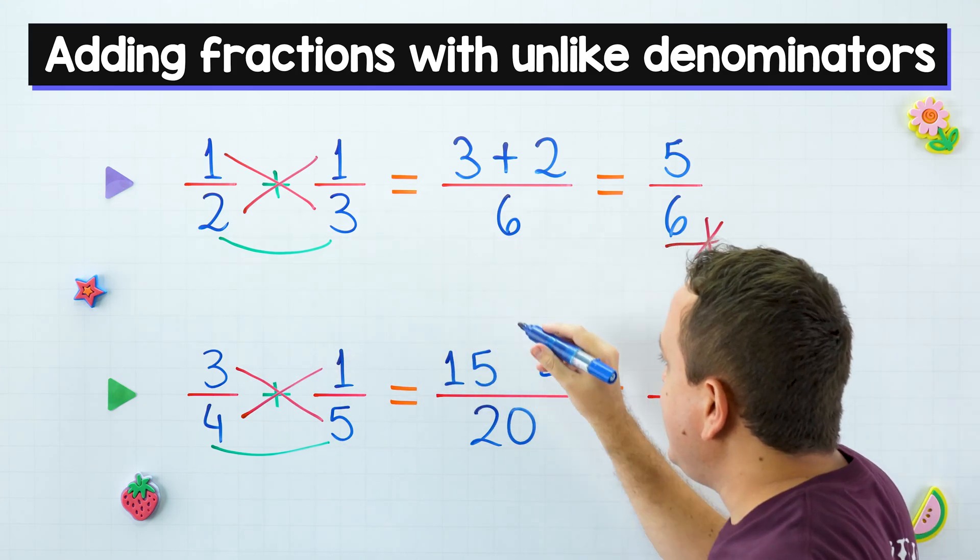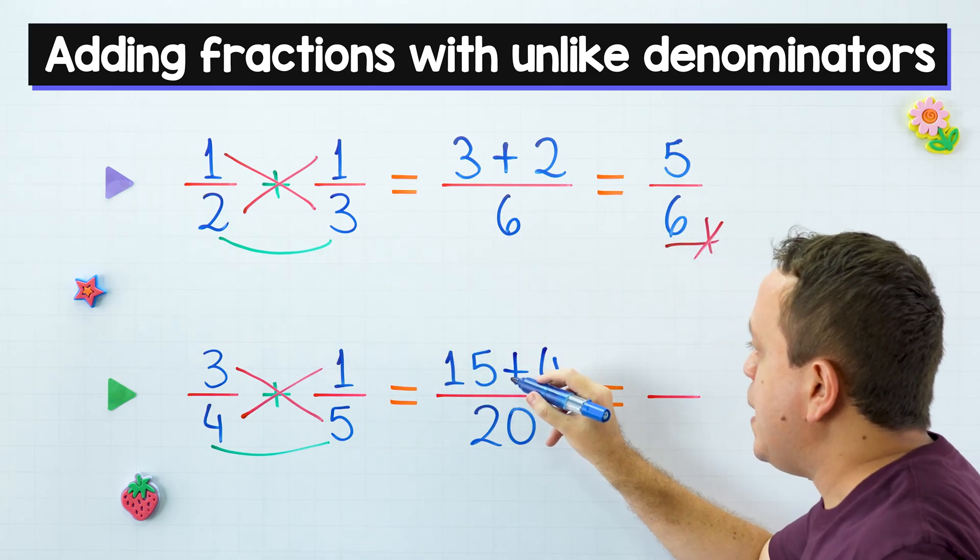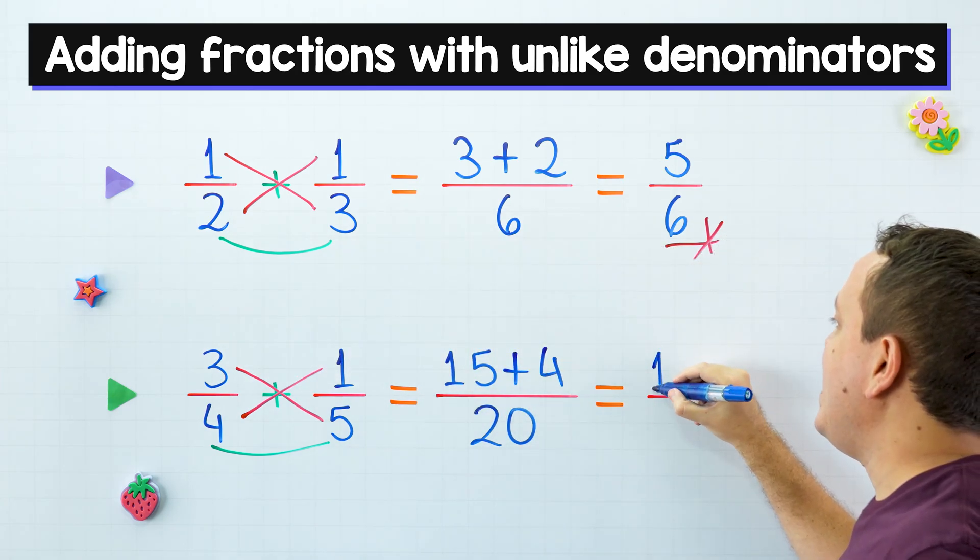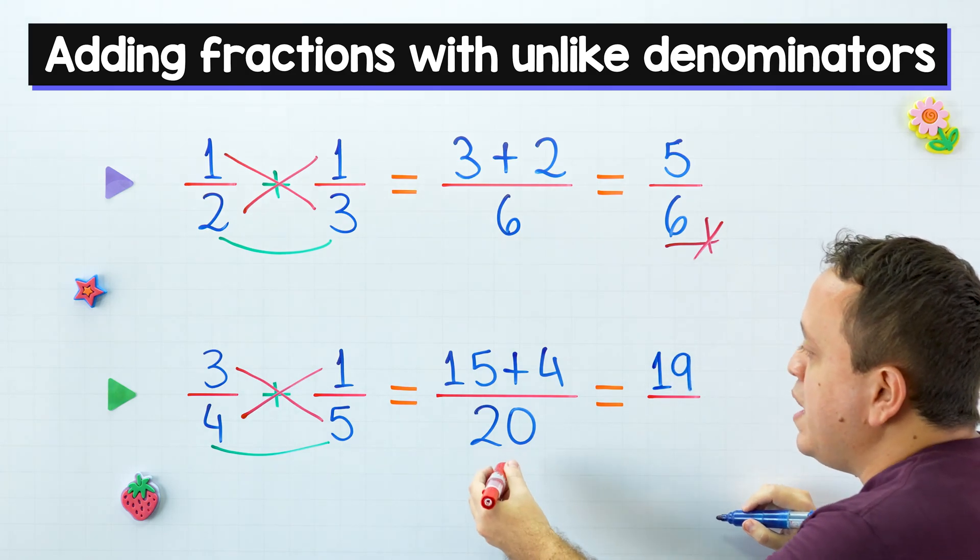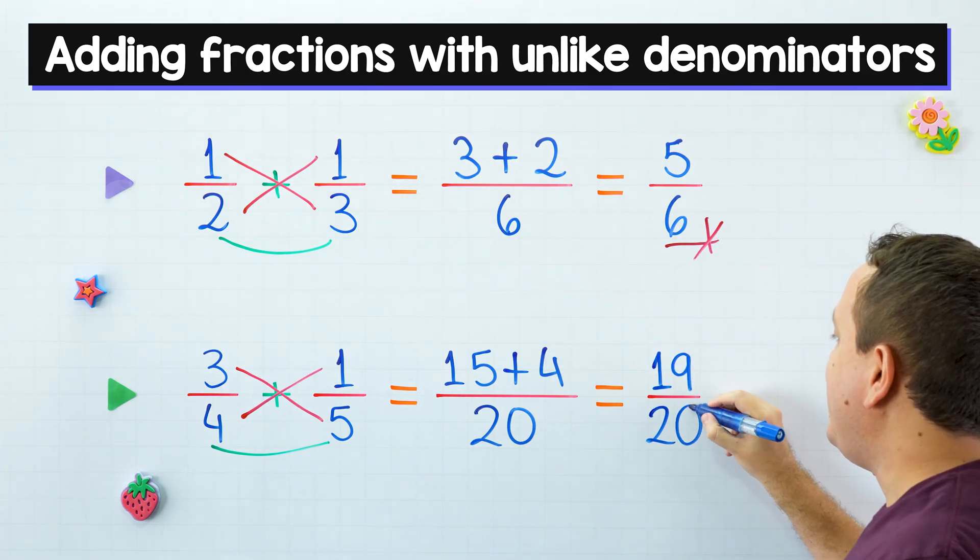Next, we put this plus sign in this position. 15 plus four is 19. Finally, we keep the denominator. 20 over there, 20 over here.